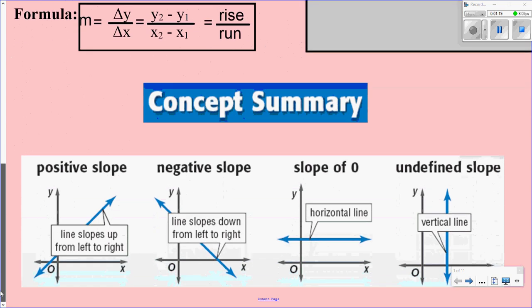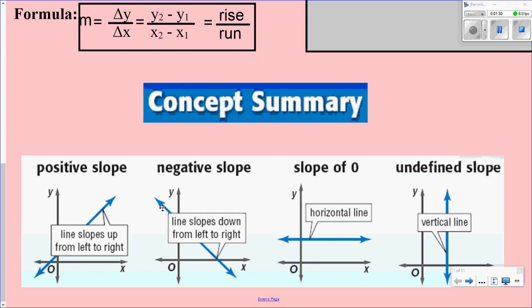We learned the four different types of slope. When reading a graph from left to right: if it goes up, that's a positive slope — you're going up the mountain. If you're going down, it's negative. If it's horizontal, it's a slope of zero. And if it's vertical, it's undefined.